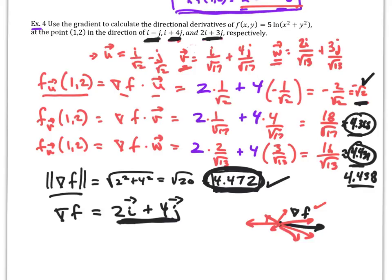Remember that the gradient goes in the direction of maximum change, and directional derivatives work off that gradient, spinning around some angle to calculate the rate of change in any given direction. I hope you enjoyed this. Thanks for listening and have a great day.